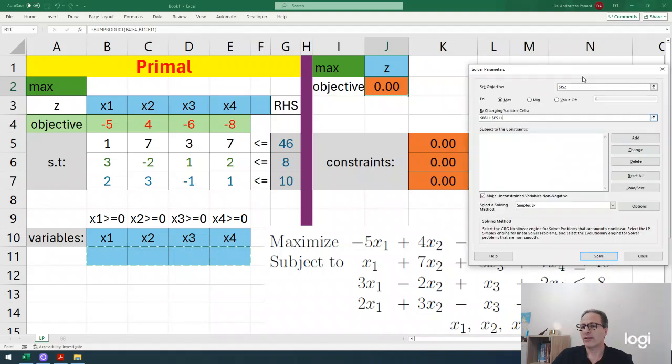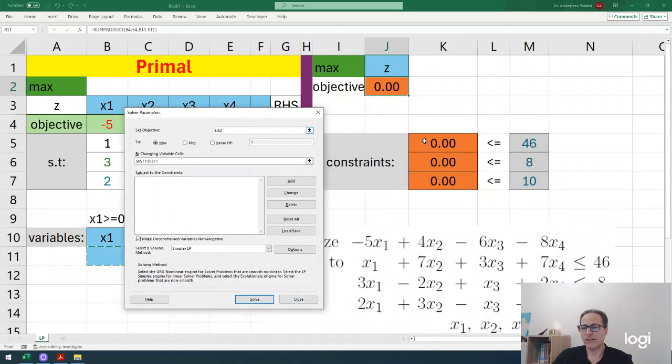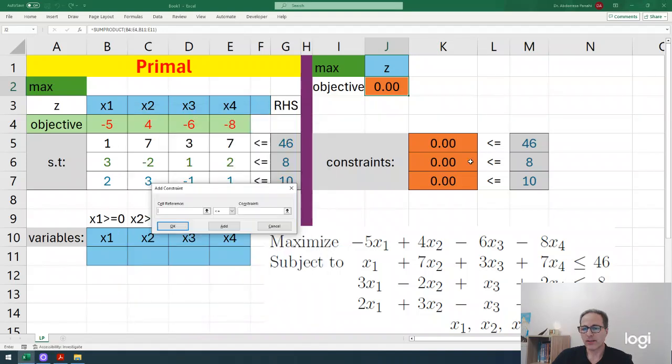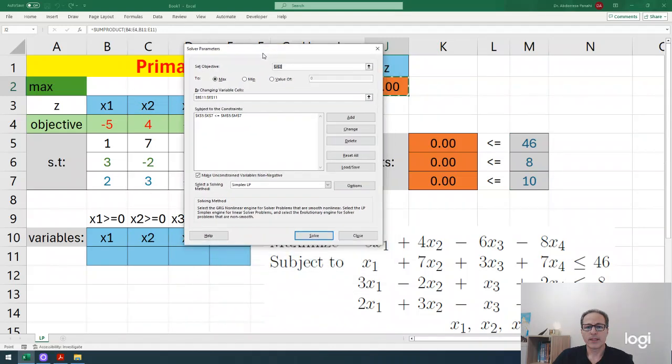We just need to add the constraints. Since our constraints are all the same type - all less than or equal to - I can add them at once. If they're different, we add them one by one. I select all left-hand sides, change the type to less than or equal to, and set the right-hand side to this column. We're done with the inequalities.